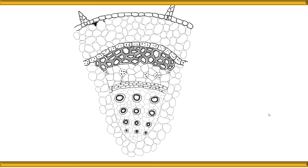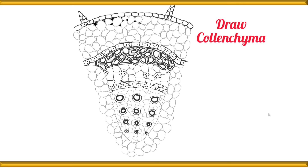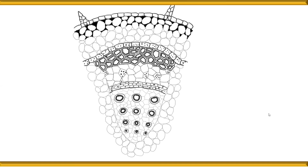Next, fill in the corner thickening of the collenchyma by shading or darkening the triangular gaps found in the first two layers only — these correspond to the hypodermis, which is collenchymatous. The layers below the hypodermis in the cortex are parenchymatous, so only the first two layers get the collenchyma treatment. Once that is done, the diagram is complete.